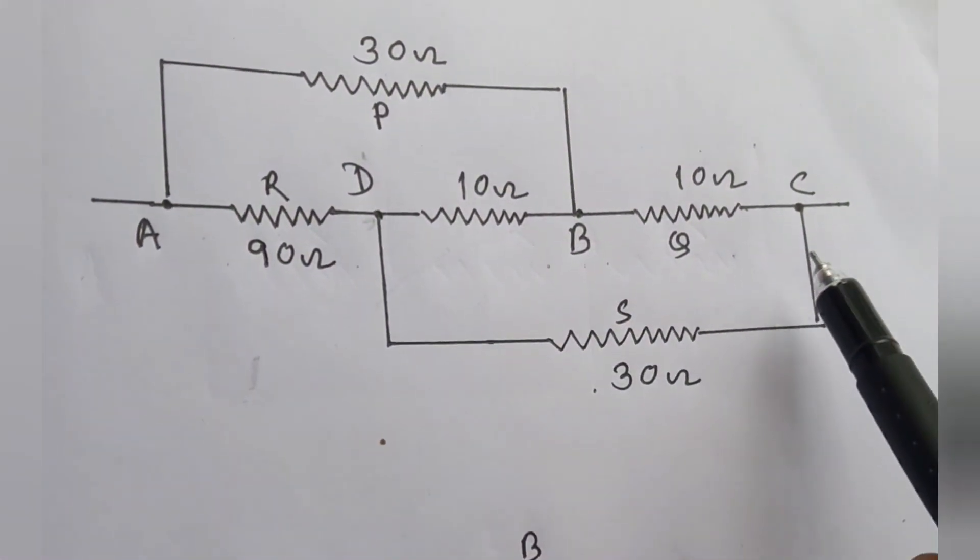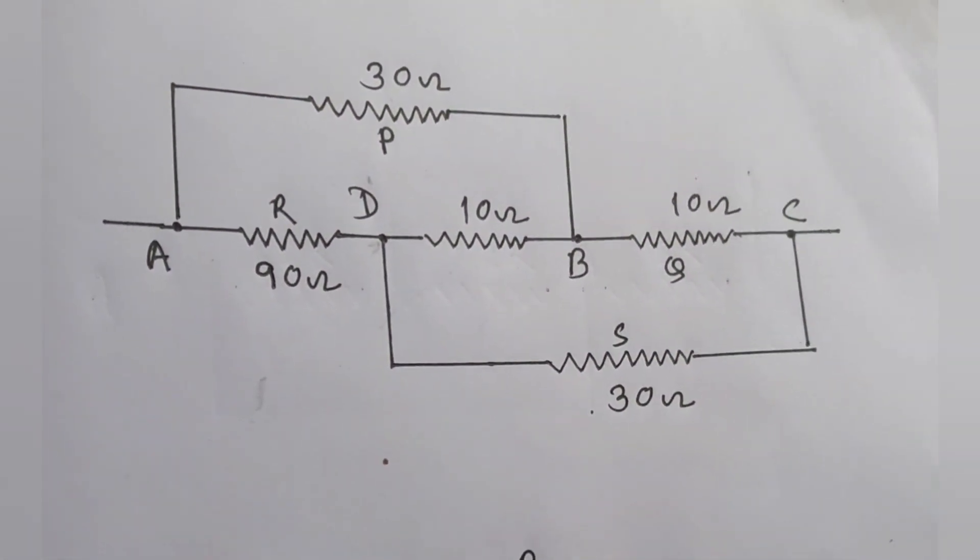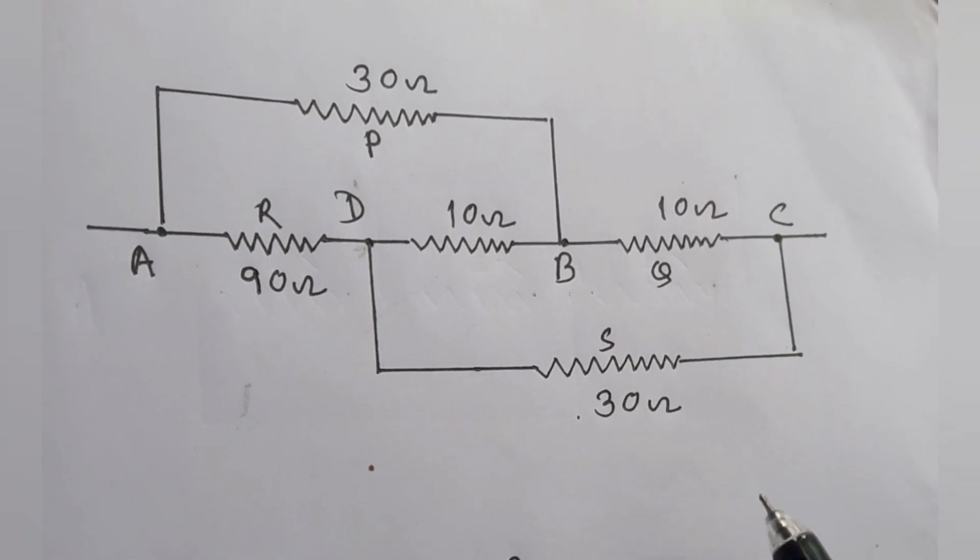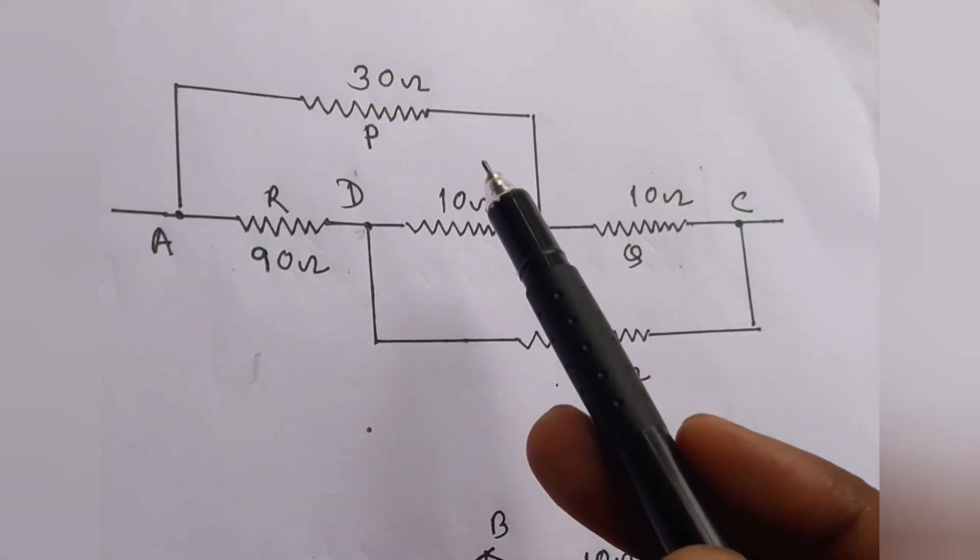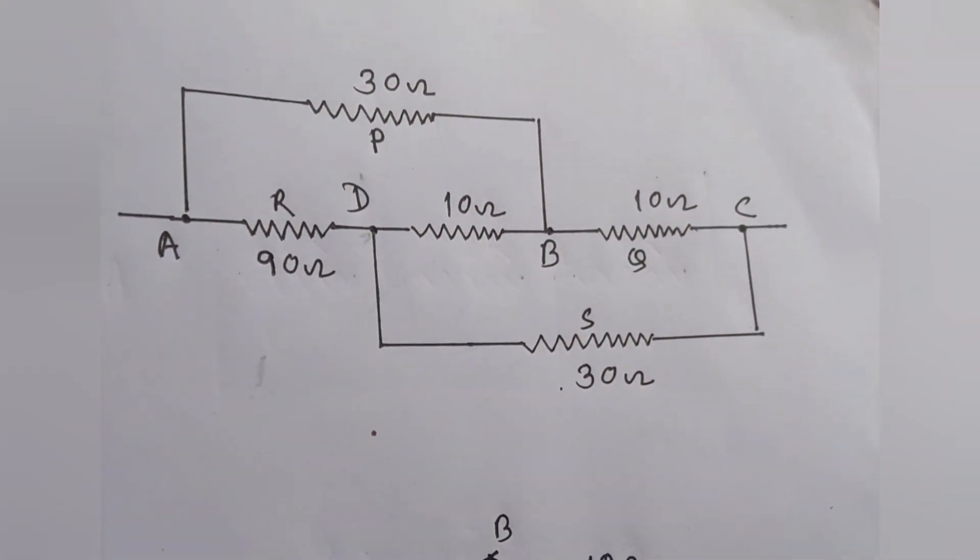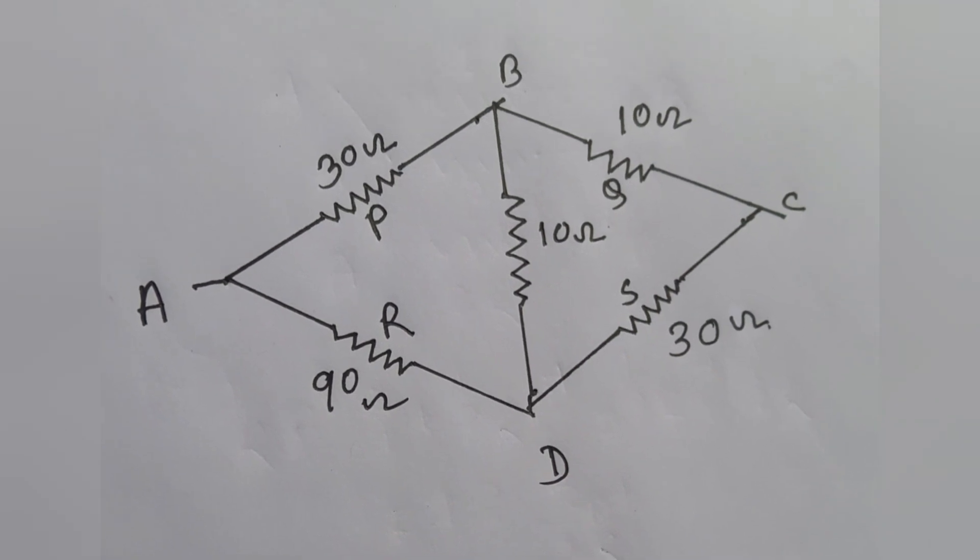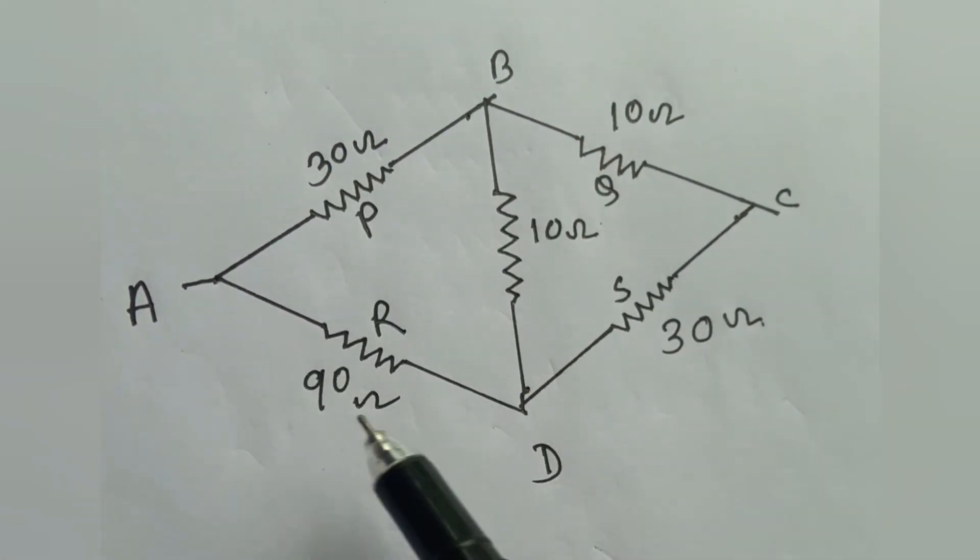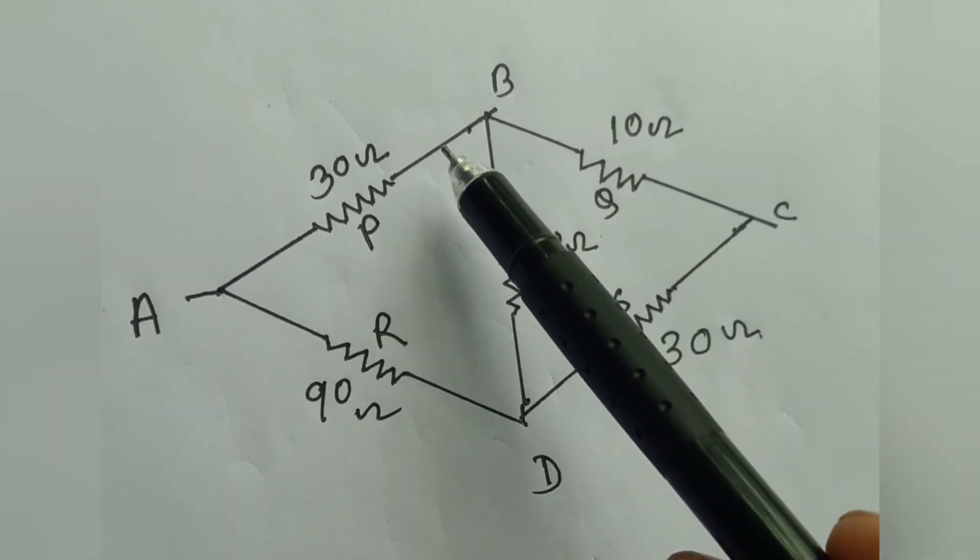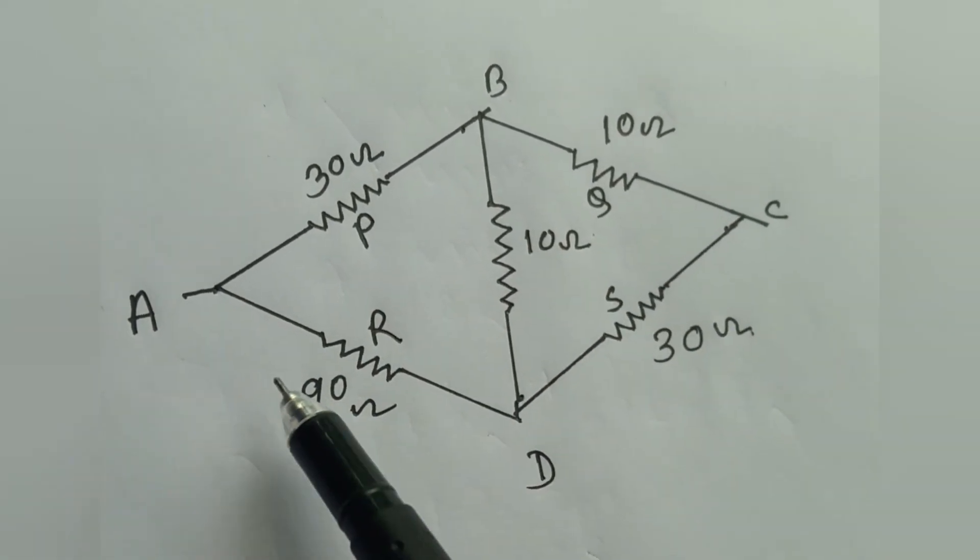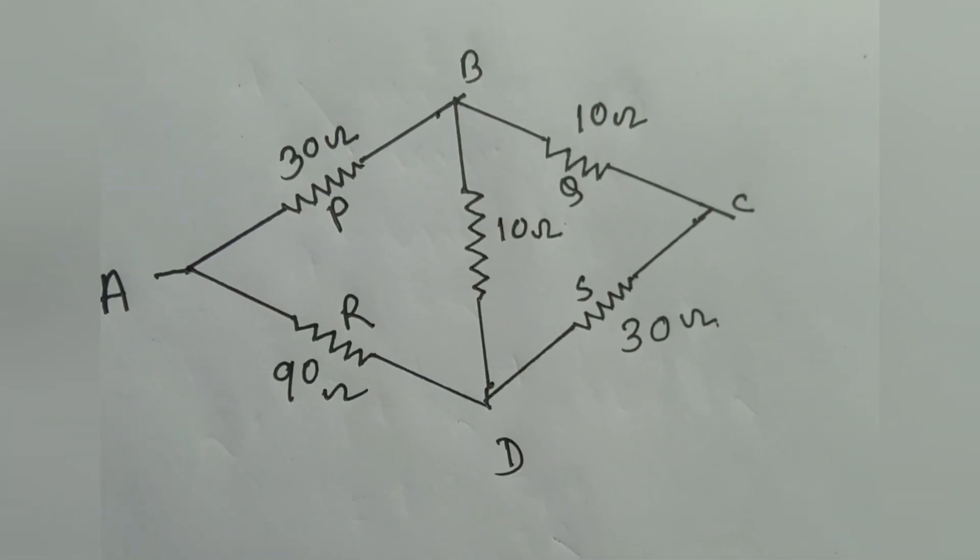This is our given circuit. If you observe it carefully, you notice that it is nothing but a Wheatstone bridge circuit. Now we will redraw it. We have redrawn this circuit and this is a Wheatstone bridge circuit. This is P arm, this is Q arm, this is R and this is S.